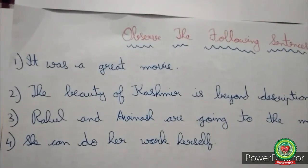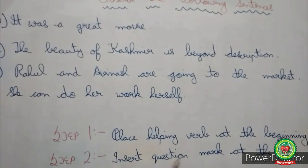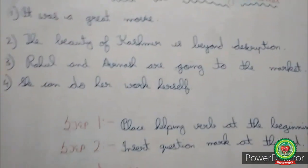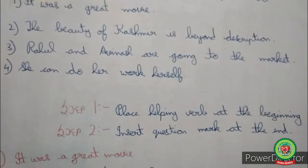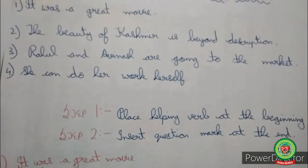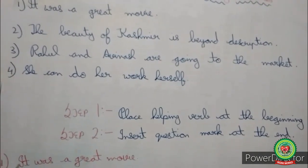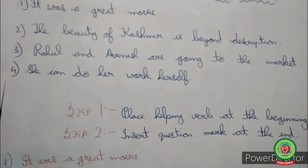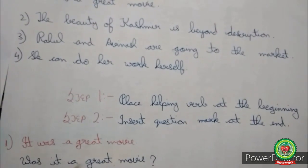So how will we change these sentences into interrogative sentences? We will first place the helping verb at the beginning and then insert a question mark at the end; the rest of the sentence will remain the same. For example, 'It was a great movie' — was is the helping verb, so we place was at the beginning: 'Was it a great movie?'